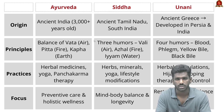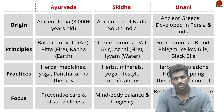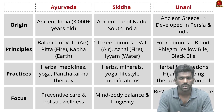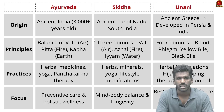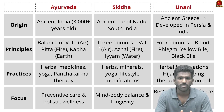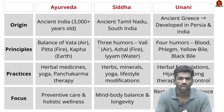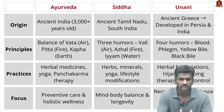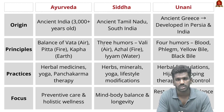Siddha medicine originated in ancient Tamil Nadu, South India, and is one of the oldest healing systems. It is based on the balance of three elements: Vali (air), Ajal (fire), and Iam (water). Like Ayurveda, Siddha emphasizes maintaining balance among these three. Siddha practitioners use herbs, minerals, and metals, along with therapies such as yoga and lifestyle modifications.